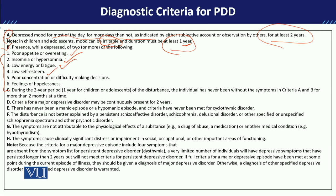The fourth symptom is low self-esteem — the child's self-esteem will not be high; they will consider themselves inferior to others. The fifth symptom is poor concentration or difficulty making decisions. The child cannot concentrate on any task, and complaints will start coming from school. They will also be unable to make even simple decisions — what clothes to wear, where to go, what to eat — they cannot decide for themselves.